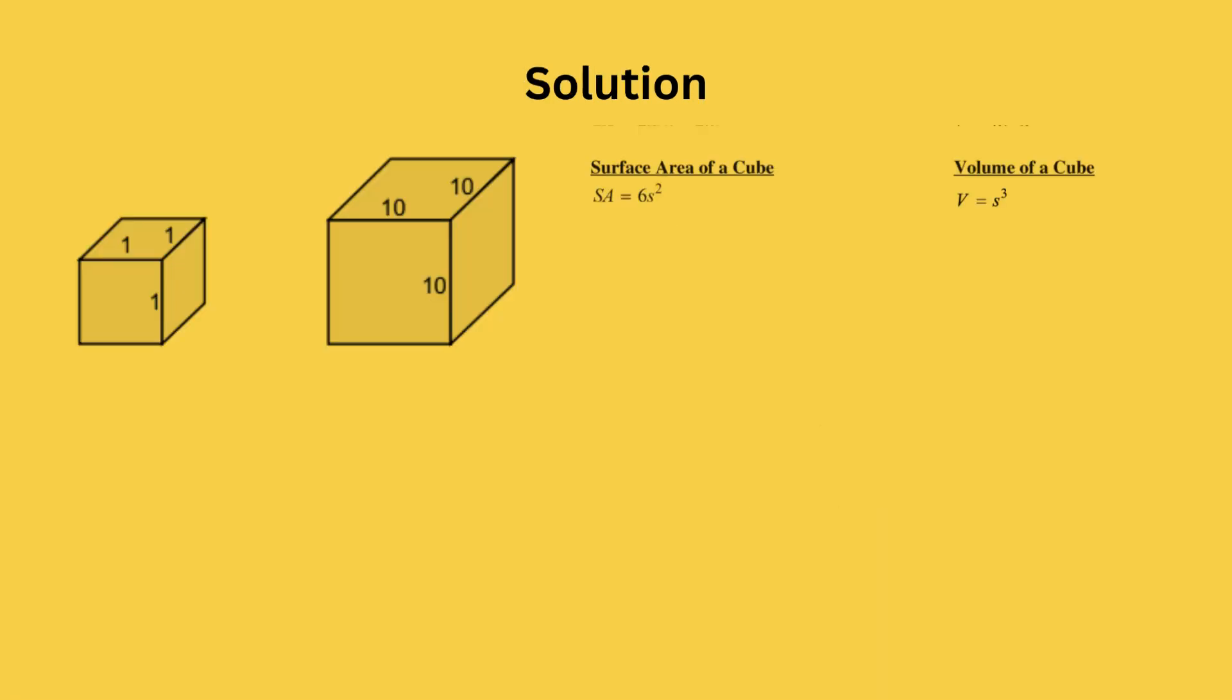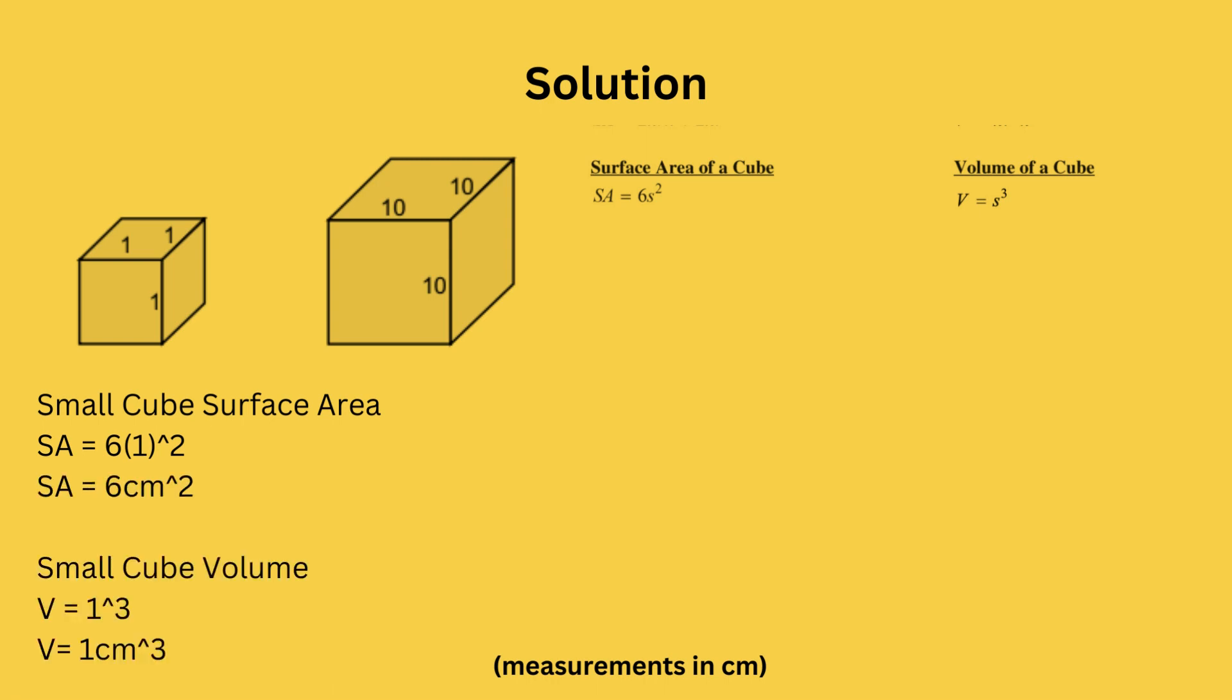So we start off by plugging in the measurements of the small cube into the surface area equation, in which s is equal to 1, as it is the length of one side of the cube. Now we can simplify the equation, finding that the surface area is equal to 6. Now we do the same for the volume. Plug in 1 into s, and once simplified, the volume is equal to 1 cm cubed.